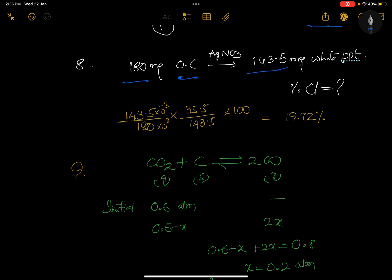This is interesting: 180 milligrams of organic compound with AgNO3 gives 143.5 milligrams of white precipitate. So percentage of chlorine is asking. For percentage of chlorine purpose we have the formula: mass of AgCl by mass of organic compound into 35.5 by 143.5 into 100. Direct formula based question, you will be getting the answer.